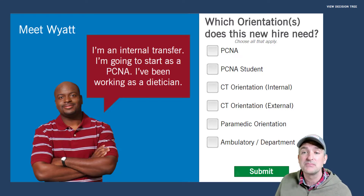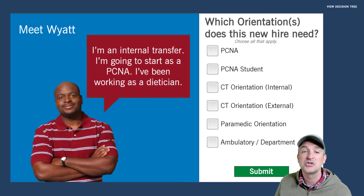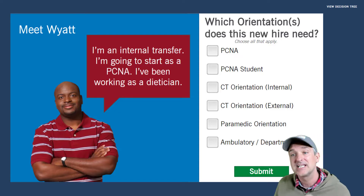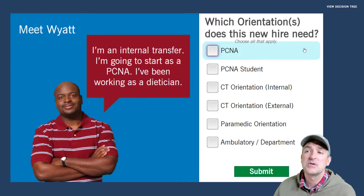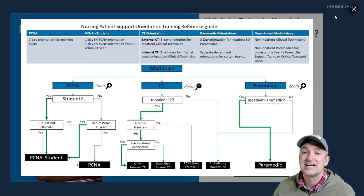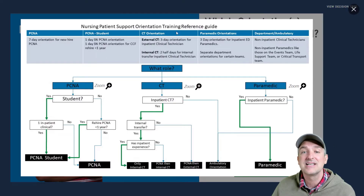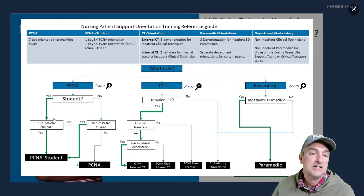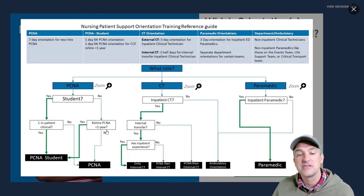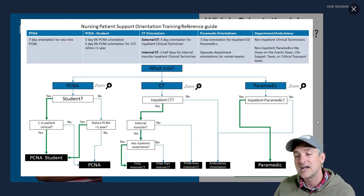They would hire different people, and it gets really tricky as far as who needs which orientation, which training, and where do they start. So based on whether they're rehired, transferred, have experience or don't, they need different combinations of different orientations.